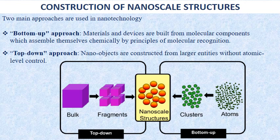Some examples: copper, which is normally an opaque substance, can become transparent. Stable materials can turn combustible, like aluminum. Gold, which is normally insoluble, may become soluble. And gold, which is chemically inert at normal scales, can serve as a potent chemical catalyst at nanoscales.